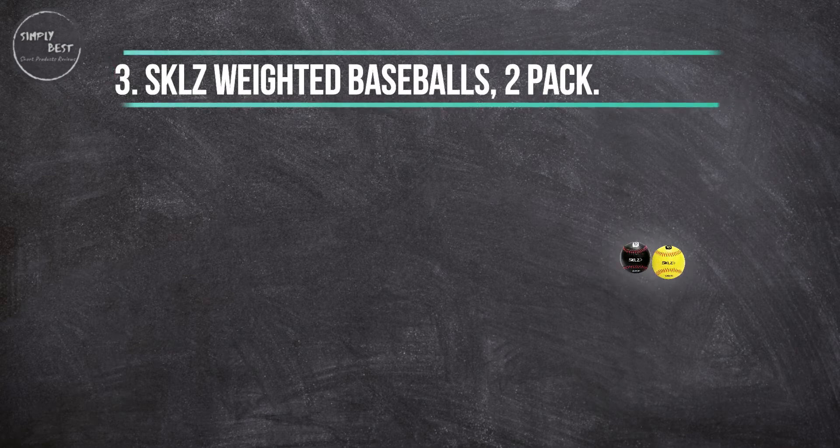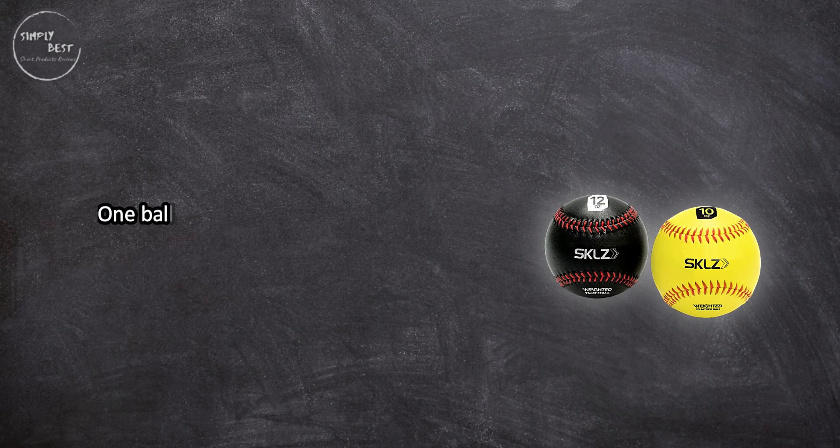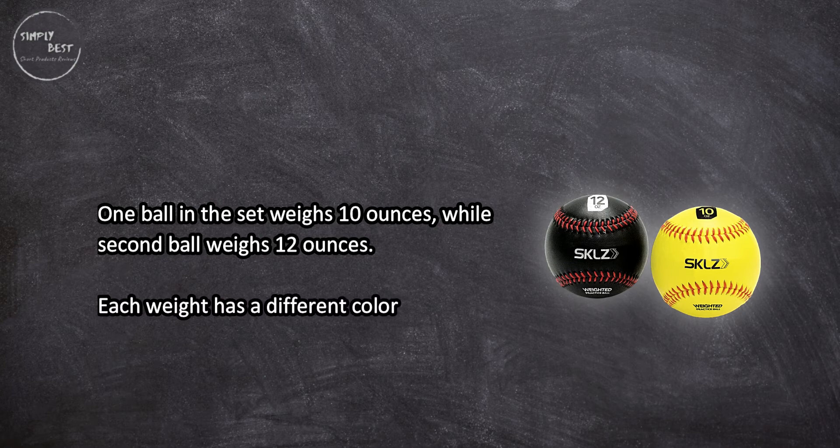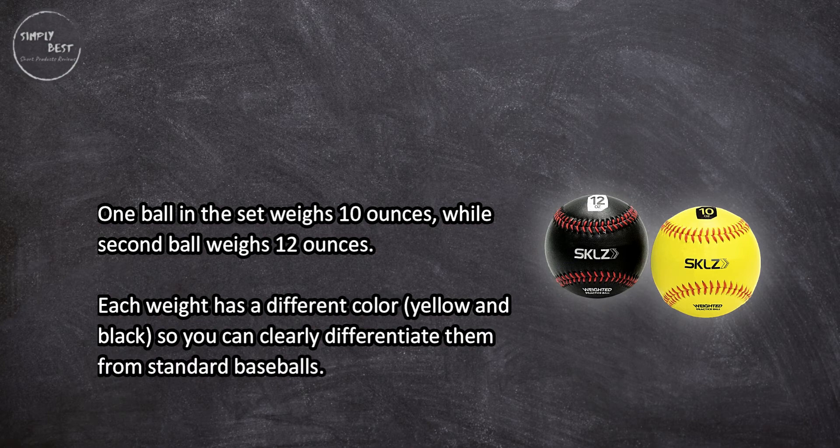At number three, SKLZ weighted baseballs two-pack. One ball in the set weighs 10 ounces while the second ball weighs 12 ounces. Each weight has a different color, yellow and black, so you can clearly differentiate them from standard baseballs.